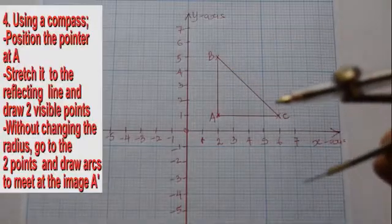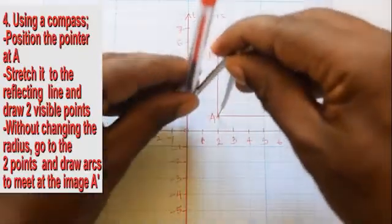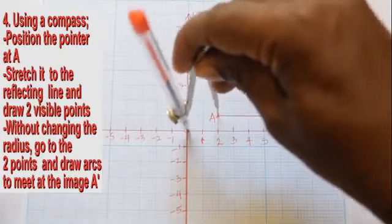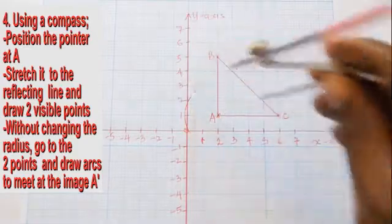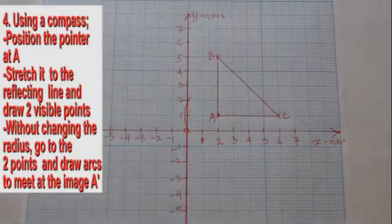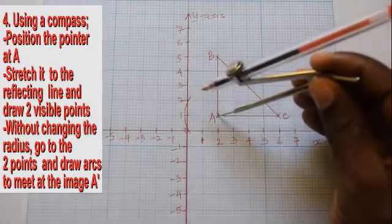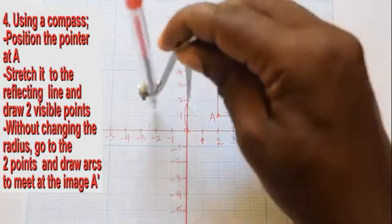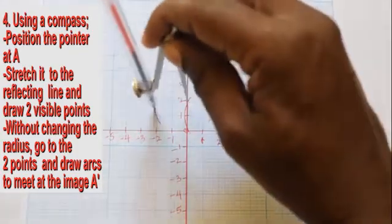Using a pair of compasses, position the compass at the object point and stretch the radius. Cut the mirror line on two different points with visible crosses. Without changing the radius, lift the compass, position it onto one of the crosses, and make an arc on the other side of the reflection line, opposite the object.